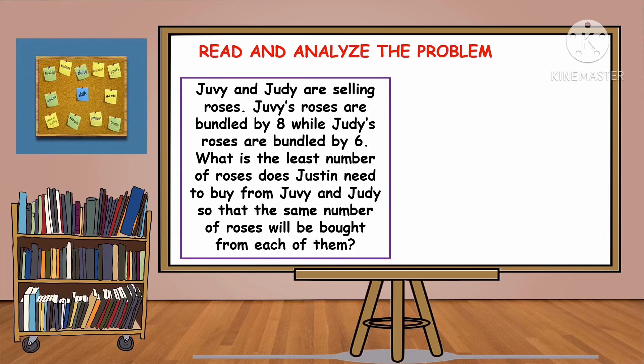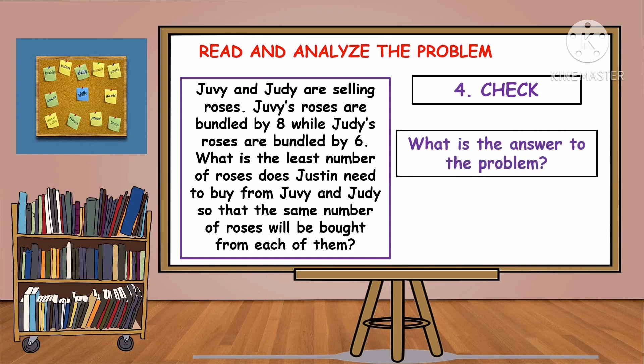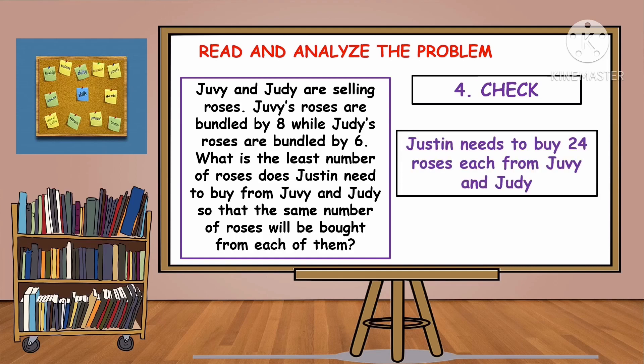For our last step: check. In checking, we are going to write our answer. The answer must be complete. The answer to the problem is: Justin needs to buy 24 roses each from Juvie and Judy. As you can see, the answer needs to be complete — you cannot just write the number. What does the 24 you got mean? It needs to be written out completely.